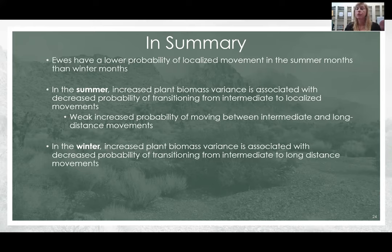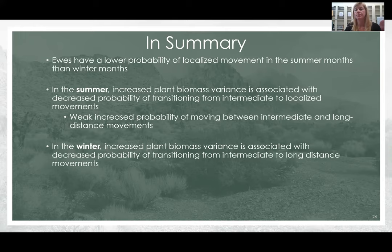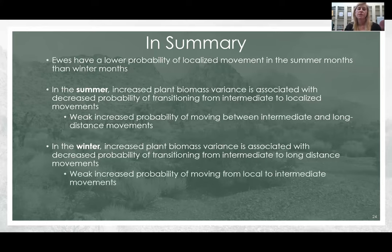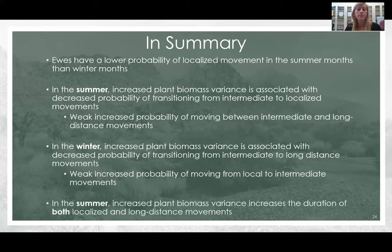We predicted that animals would be more likely to localize as plant biomass increased during the winter, as they would want to stay on a good forage patch. We did not find a significant trend with them switching to a localized short-distance state; we only found that they were less likely to transition into long-distance movement as plant biomass variance increased. We also found a weak increase in probability of moving from localized to intermediate movements, but this was not significant. Increased plant biomass variance increased the duration of both localized and long-distance movements in summer only.